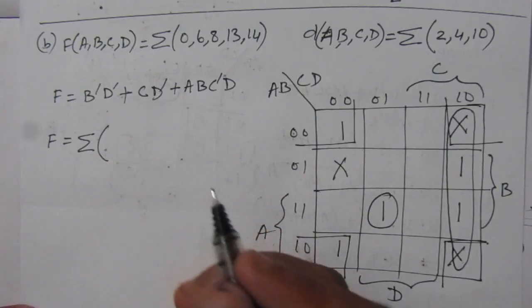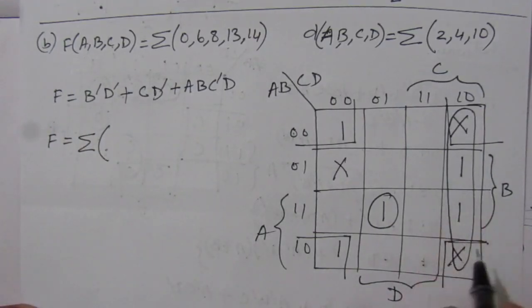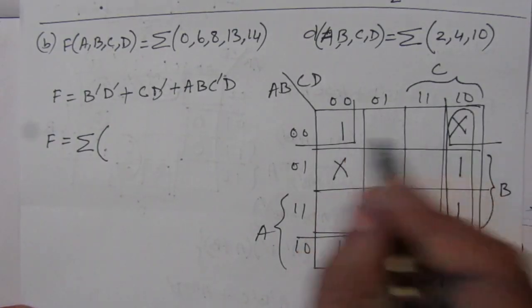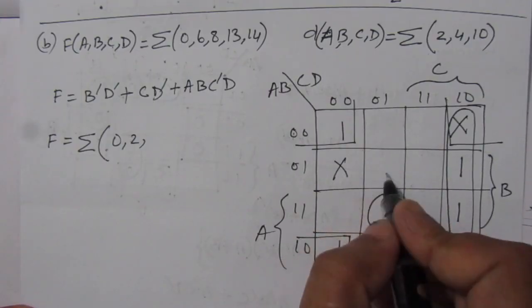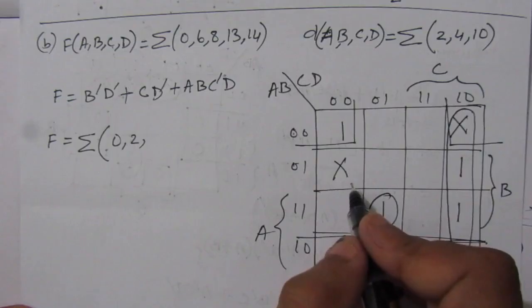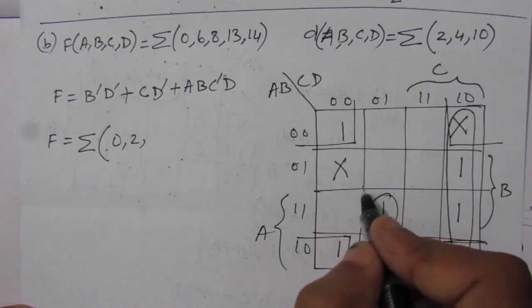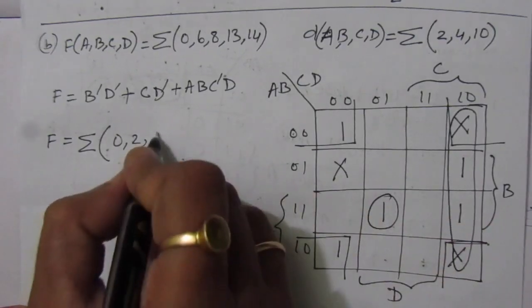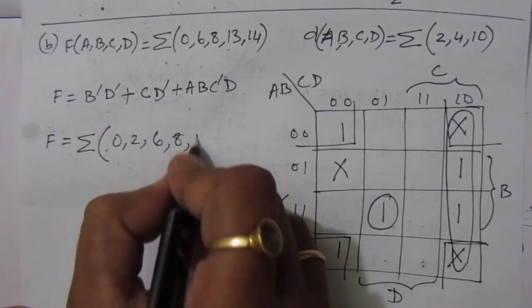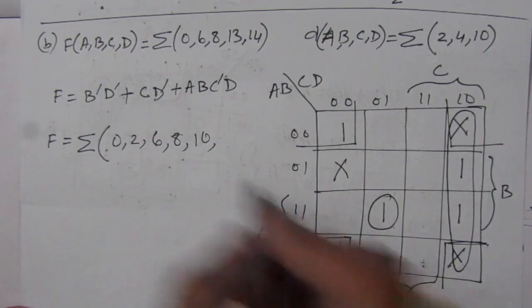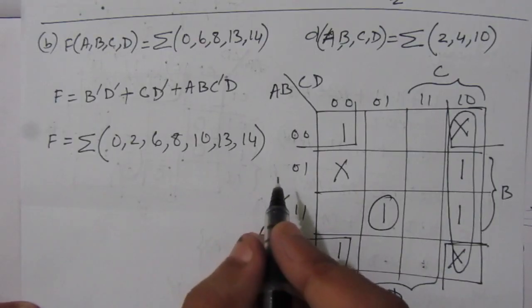Now we have to express it in sum of minterms. We have to write the minterms that are combined with any of the values. Positions 0 and 2 are there. Position 4 cannot be considered because this don't care condition is not combined with any other values, so neglect it. Then 5, 6, 7, 8, 9, 10, 11, 12, 13, 14. So this is the sum of minterms expression of the given function, and the second part is complete.